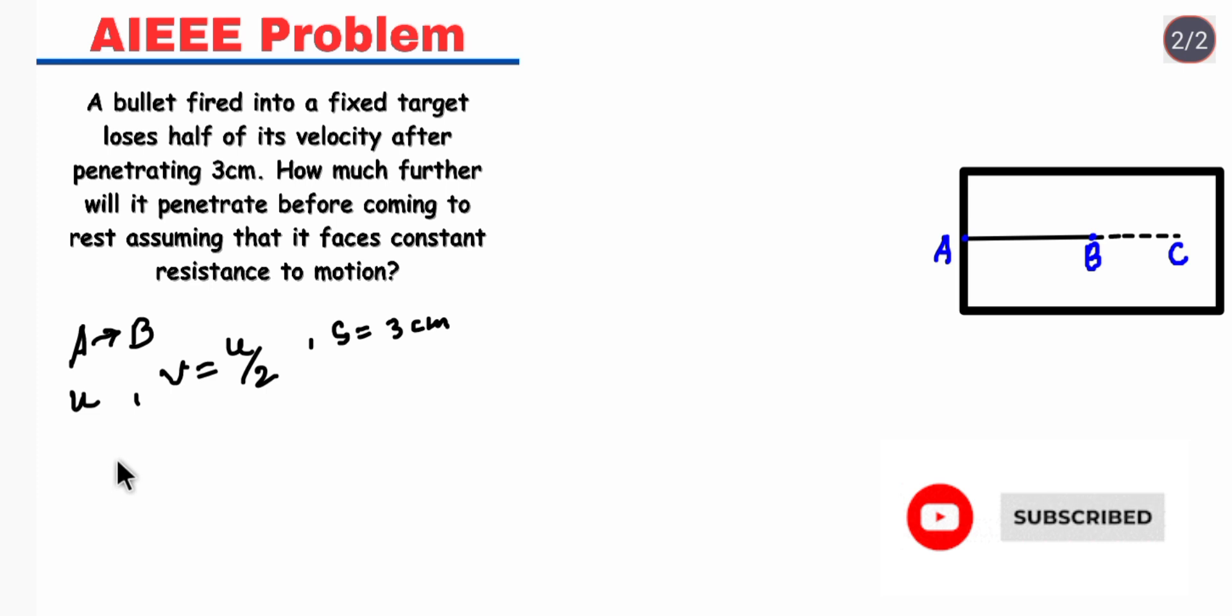If we apply the relation V squared equals U squared plus 2AS, here V is U by 2, so it will be U squared by 4 equals U squared plus 2 into A into 3.